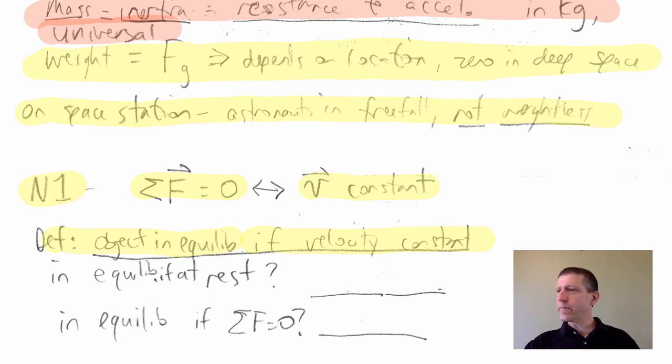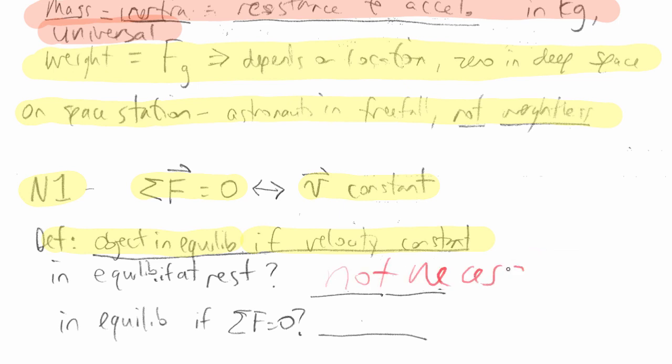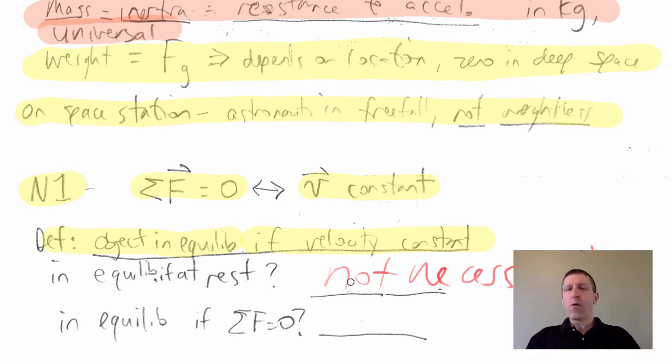And the answer is not necessarily. There's a simple example where an object's at rest but is not in equilibrium. What's that? Throwing something up in the air. At the very top, it was instantaneously at rest, but there was still a force on it. So being at rest is not necessarily the same as equilibrium.